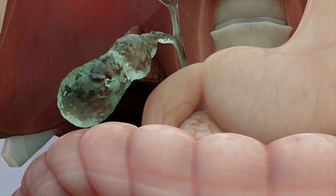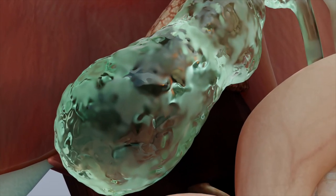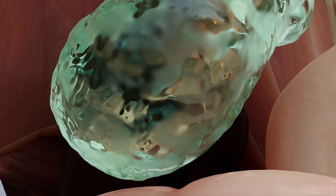Your gallbladder is a small, pear-shaped organ on the right side of your abdomen, just beneath your liver. It stores bile, a fluid produced by the liver that helps break down fatty foods.